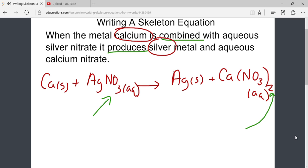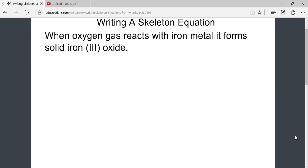Let us look at another example. Again, look for keywords that separate reactants from products. When reading this example, oxygen gas reacts with iron metal, this reveals the reactants are oxygen gas and iron. The phrase, it forms, tells us what the products are. Following it forms, solid iron three oxide.